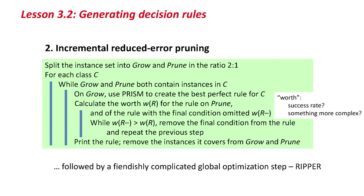For each class, while there are instances of that class in both sets, we use PRISM to create the best perfect rule for that class. Then we calculate the worth of the rule. There are different ways of measuring worth — you might use the success rate, or some more complicated metric, perhaps even an entropy-based one. We calculate the worth of that rule, then omit the final condition — the last one added — and look at the worth of that. If it's worthwhile, we take away that final condition and keep trying to remove conditions until we get an optimal version of the rule. So we build up the rule on the grow set, then prune it back on the prune set until we get a rule with good worth.